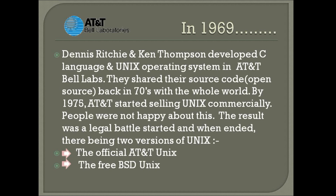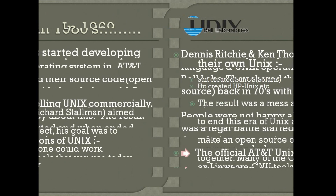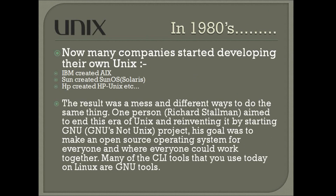After this, in 1980, many companies came to create their own versions of Unix. For example, IBM made AIX, Sun made SunOS (which is now called Solaris), and HP made their own Unix. So many companies had made it.